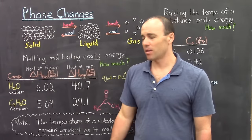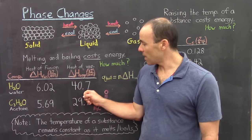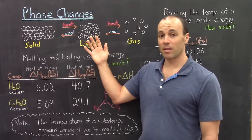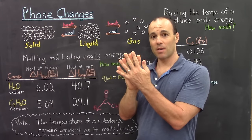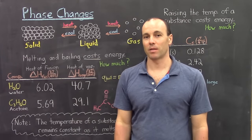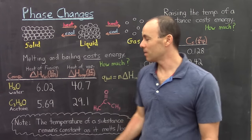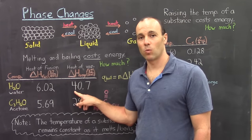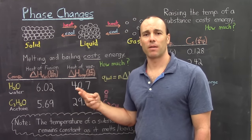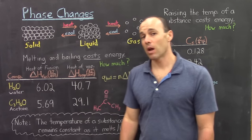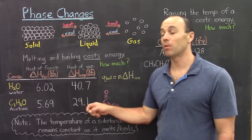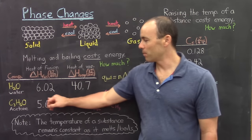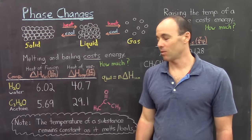The heat of vaporization is a lot larger than the heat of fusion: 40.7 kilojoules per mole versus 6.02. That should make some sense — if you look at the liquid, particles are close together, and to boil the liquid you're separating those particles completely, which costs quite a bit more energy than just to melt them. So if you want to vaporize one mole of water at the boiling temperature, it'll cost 40.7 kilojoules. The formula is the number of moles times the heat of vaporization, and a similar formula for melting: the number of moles times the heat of fusion.